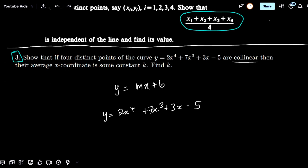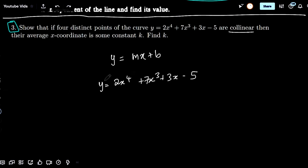We can equate the y values here to get 2x to the 4 plus 7x cubed plus 3x minus 5 equals mx plus b.